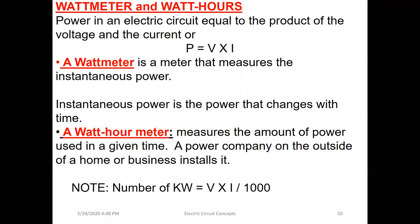An instrument is required to measure power. The name of the instrument is a wattmeter — the word wattmeter consists of two sections: watt and meter. A wattmeter measures instantaneous power, which changes with time. Every time the current increases — for example when you switch on a device in your home like a microwave — more power is consumed and more power is measured. That is why power almost always changes with time.